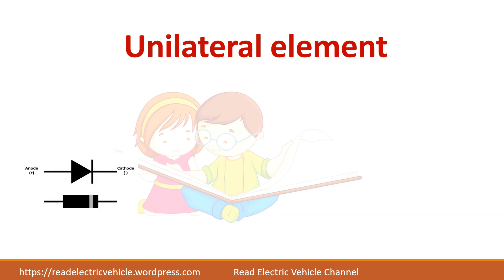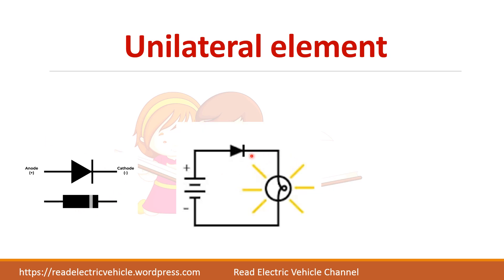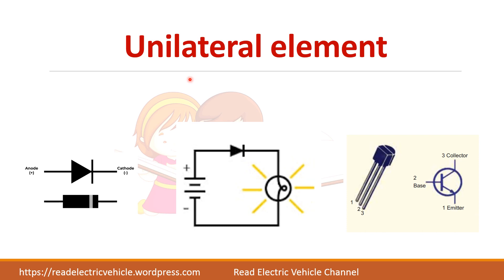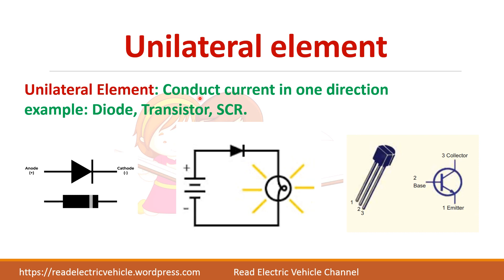A unilateral element is illustrated by a diode. When a diode is forward biased it carries current, and when reverse biased it carries no current or only leakage current. So a diode is a unilateral element. Transistors also fall under this category because they carry current only when forward biased. An element which conducts current in only one direction is called a unilateral element.